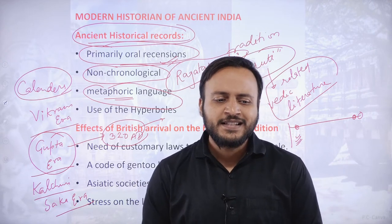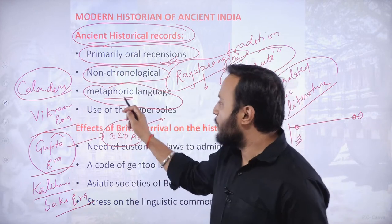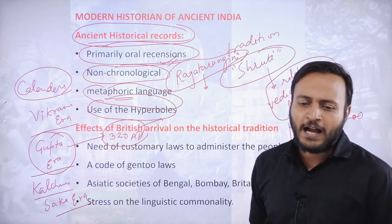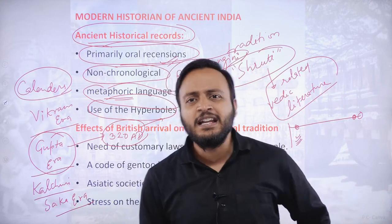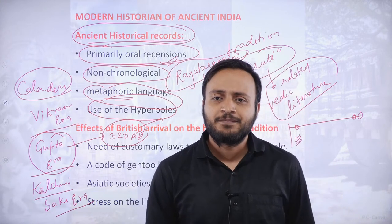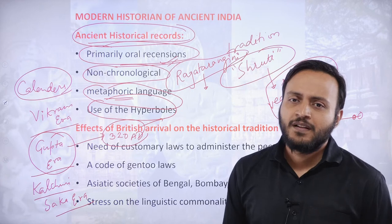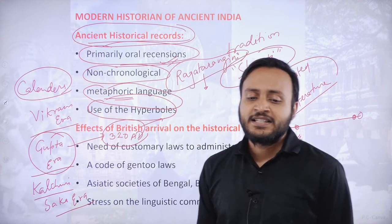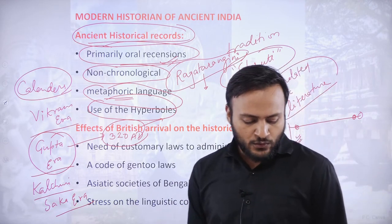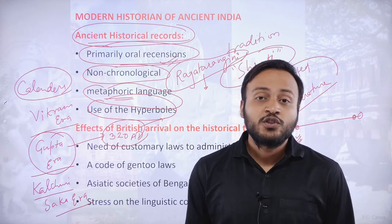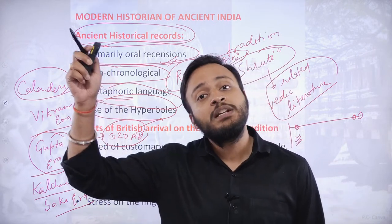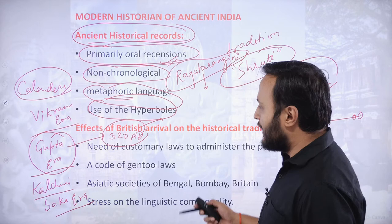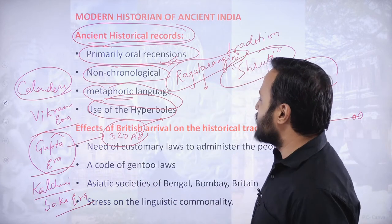This is how ancient Indian literature treats history. Use of hyperboles is another major feature — everything is exaggerated. The 10,000-year example illustrates this: no elephant can live that long. These exaggerations are prevalent throughout ancient Indian historical texts.